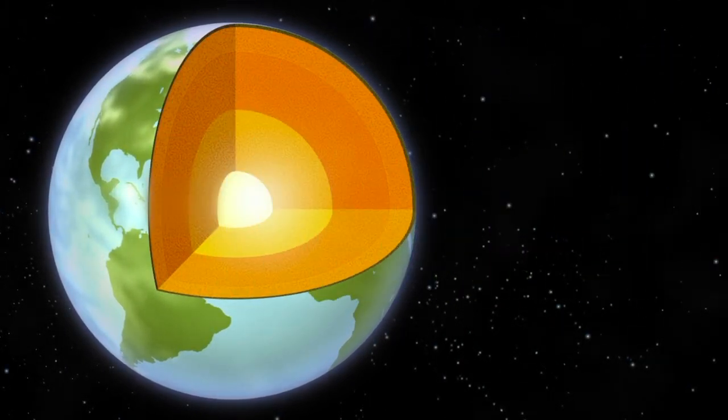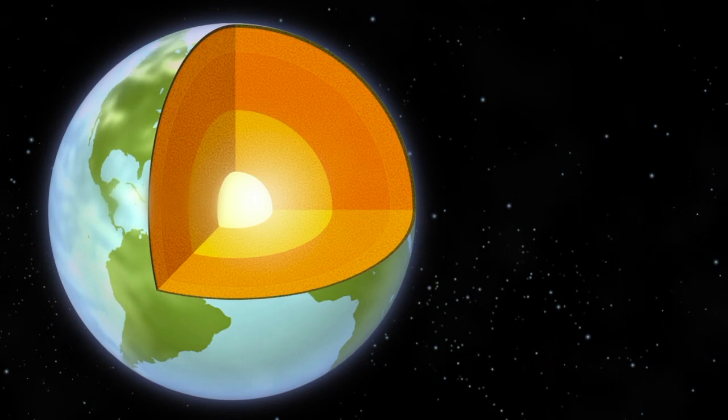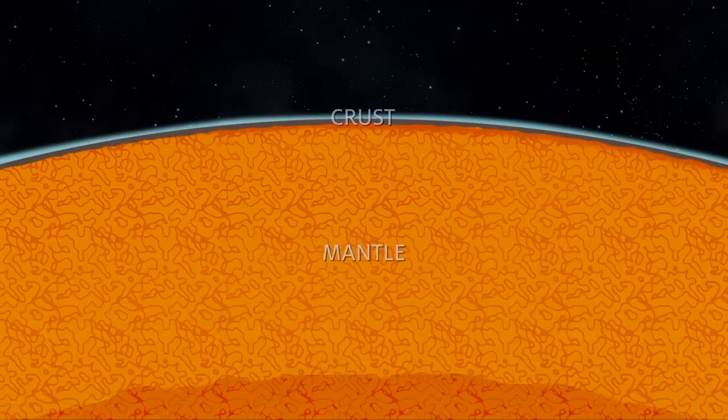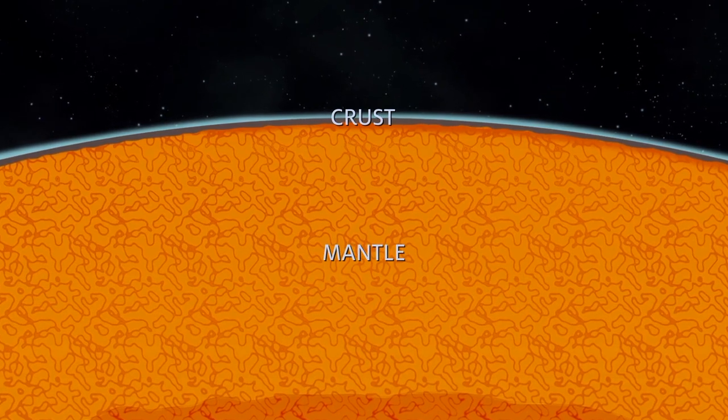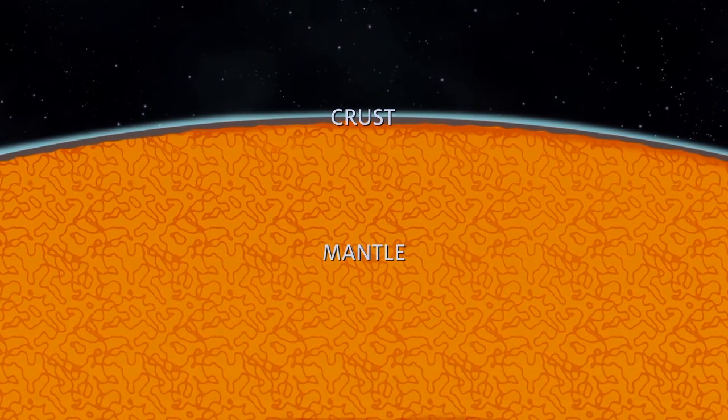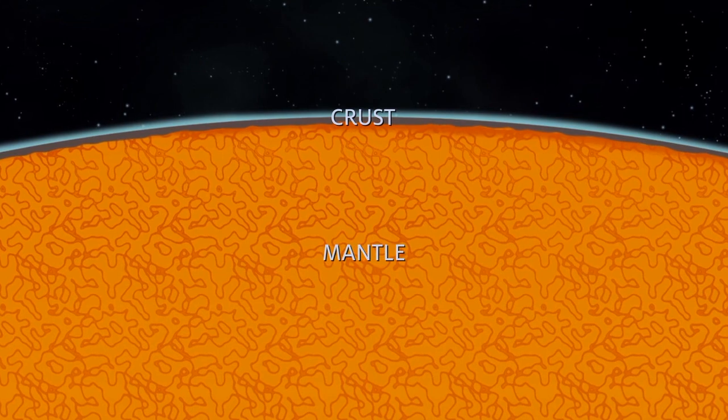If we could slice into the Earth and see inside, we would see the layers that form our planet. The top layer of rock is called the crust. For a sense of scale, imagine the Earth as a peach. The skin of the peach is about as thick as the crust of the Earth.